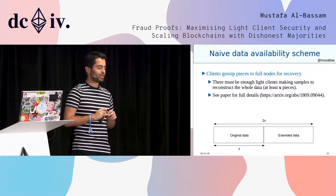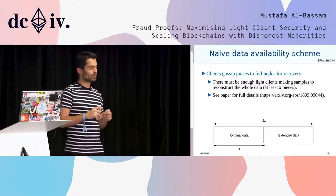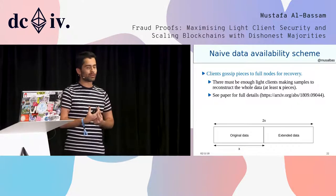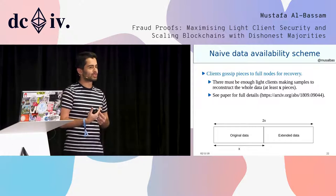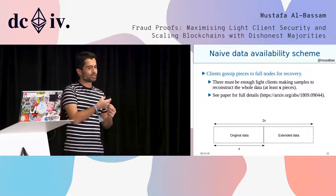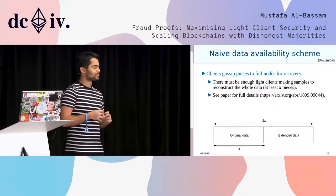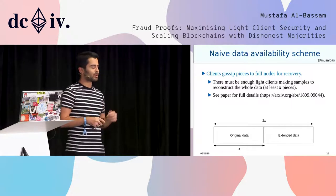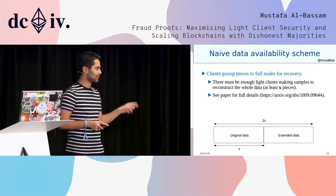For this to work, you need a sufficient number of light clients to make enough samples to be able to reconstruct the entire data. If you only have one light client, there aren't enough clients to sample 50% of the block, so the scheme wouldn't work. There are ways to get around this, but I'm not going to mention them in this talk — they're in the full version of the paper, which also has more analysis and graphs showing how many light clients you need exactly.